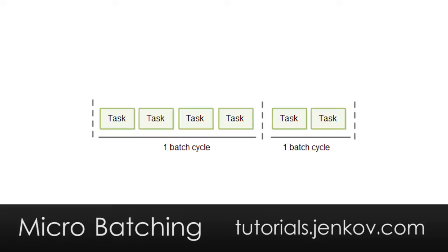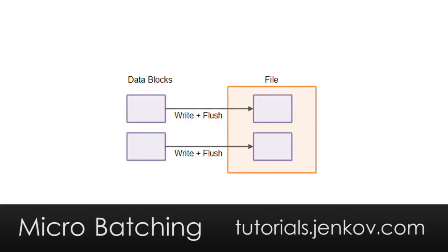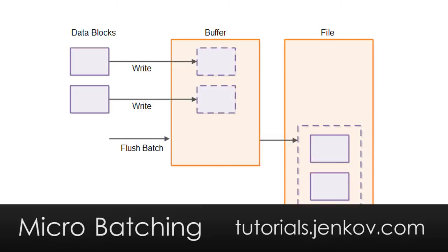Micro-batching is useful in several different scenarios, and I will cover some of them here. First of all, if you need to write data to disk, then it's always faster to write bigger chunks of data to disk than it is to write smaller chunks of data. And by that, I mean you can get a higher throughput, a higher total amount of data written to disk if you write in bigger chunks than in smaller chunks. Because of that, it makes sense to batch up the chunks of data you need to write to the disk and write them in bigger batches, in bigger chunks to the disk at the same time.